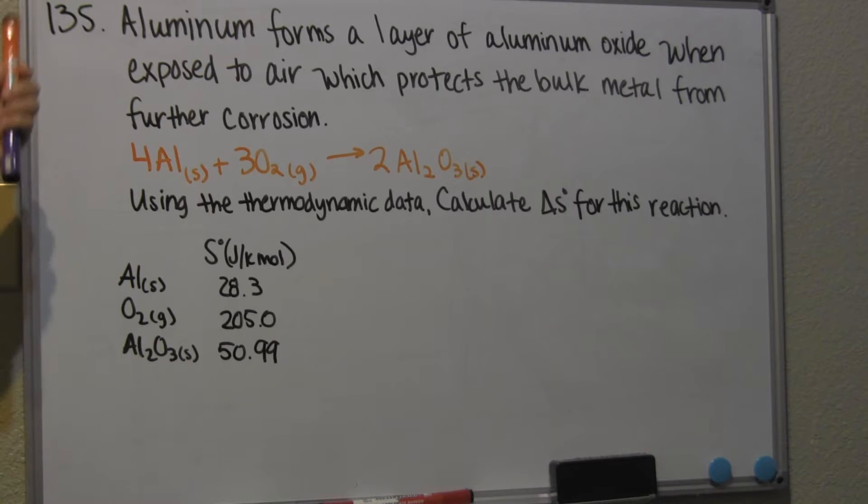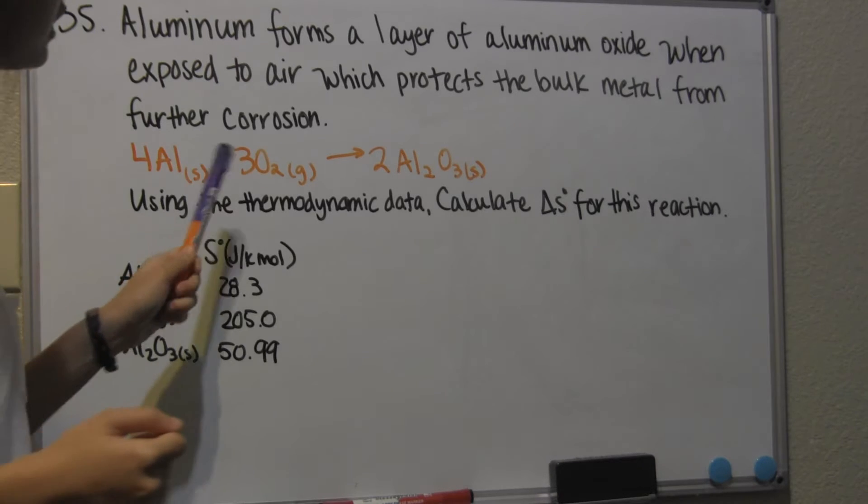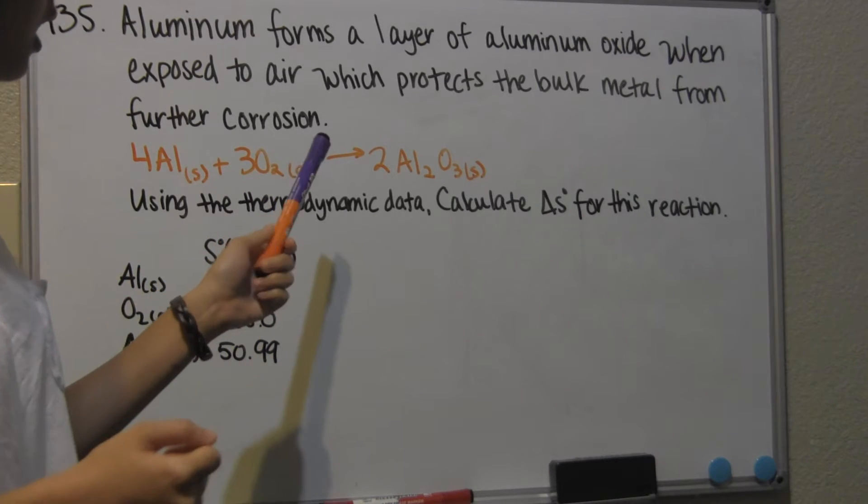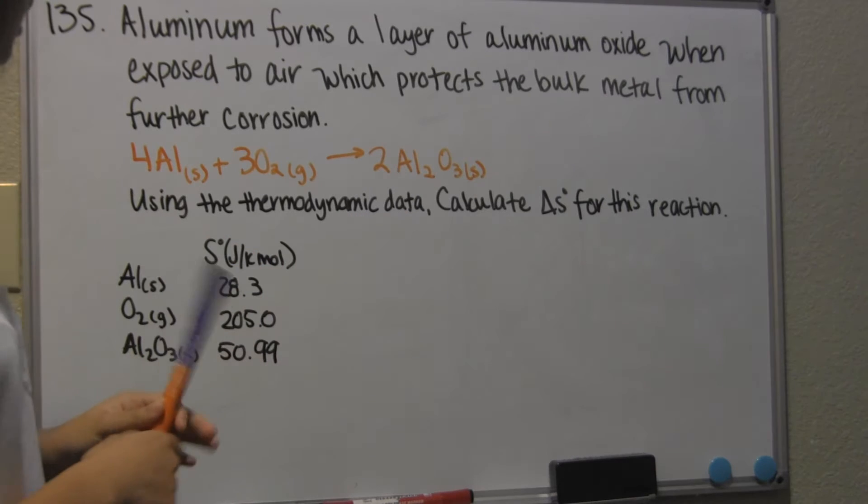So the question is number 135 on the problem set. Aluminum forms a layer of aluminum oxide when exposed to air which protects the bulk metal from further corrosion. And the reaction that they give us is 4 aluminum plus 3 oxygen makes 2 aluminum oxide. Using the thermodynamic data, which is this right here,